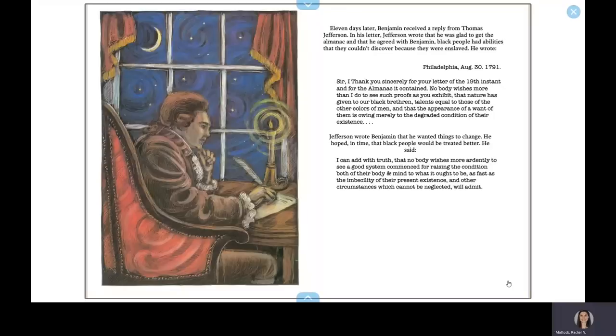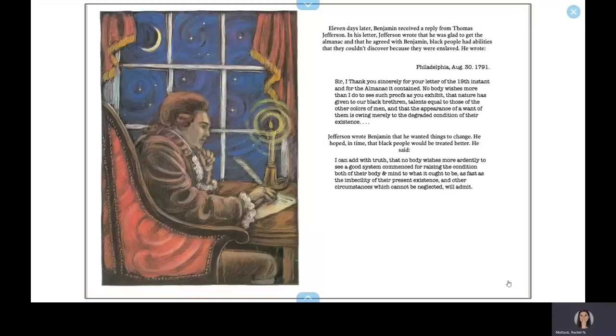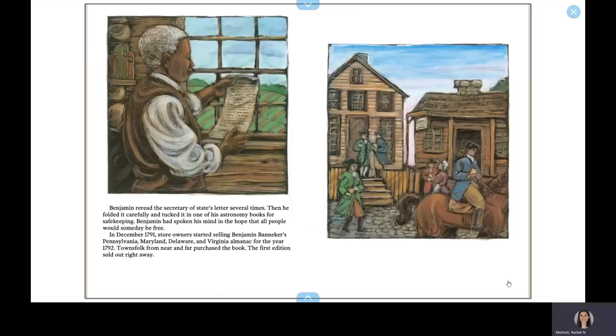Jefferson wrote Benjamin that he wanted things to change. He hoped, in time, that black people would be treated better. He said, I can add with truth that nobody wishes more ardently to see a good system commence for raising the condition both of their body and mind to what it ought to be, as fast as the imbecility of their present existence and other circumstances, which cannot be neglected, will admit. Benjamin re-read the Secretary of State's letter several times. Then he folded it carefully and tucked it in one of his astronomy books for safe keeping.